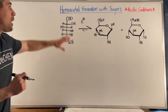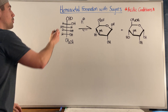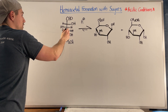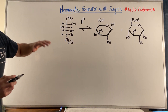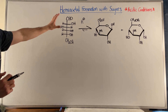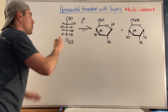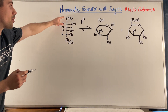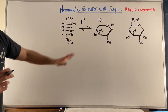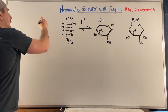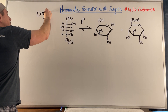So if you have a carbohydrate, right here for example we have a 1, 2, 3, 4, 5, 6 carbon sugar with an aldehyde at the top - it's an aldohexose. It's a D sugar because the last carbon at the bottom, farthest away from the top, has the OH on the right-hand side. So we know it's a D sugar, and this one in particular is D-glucose.